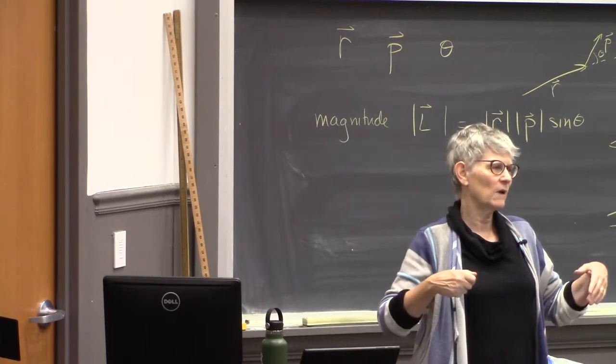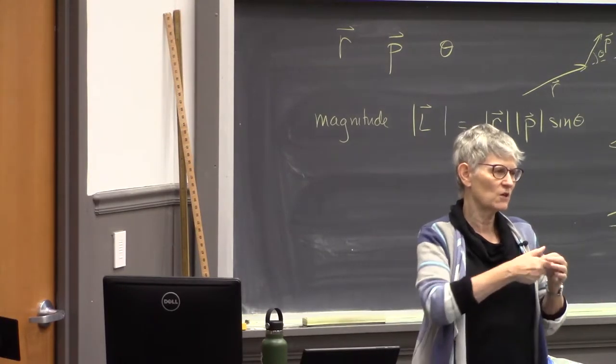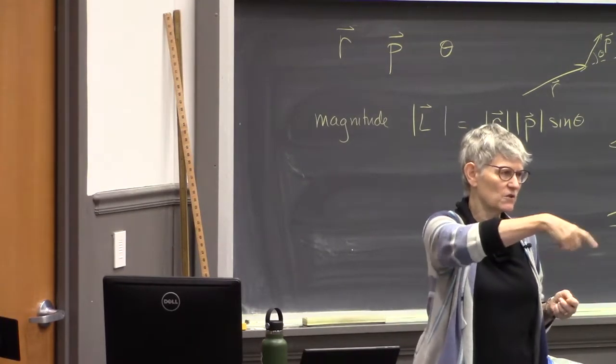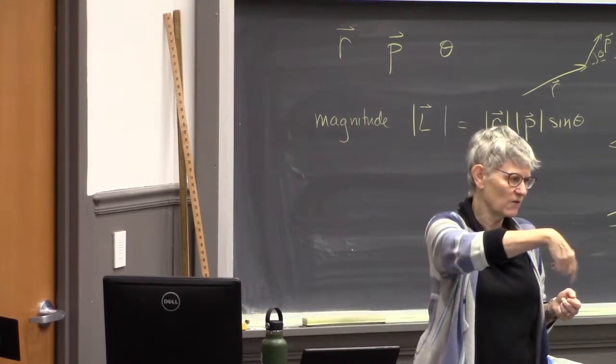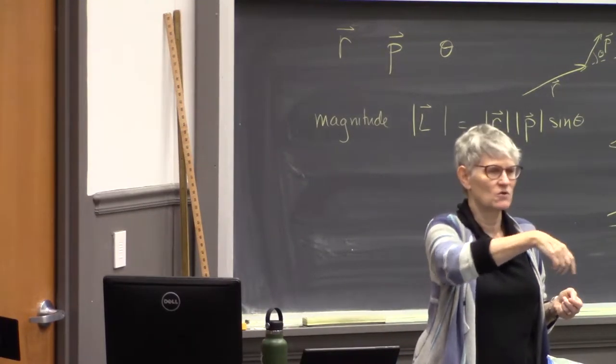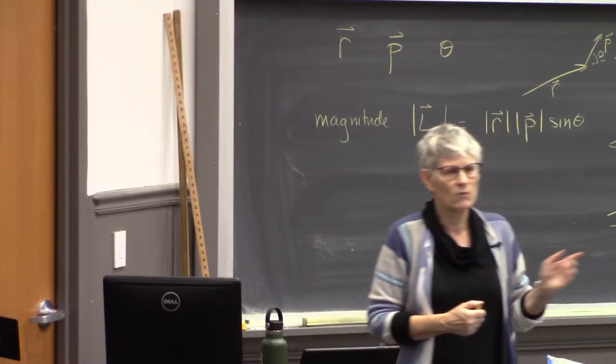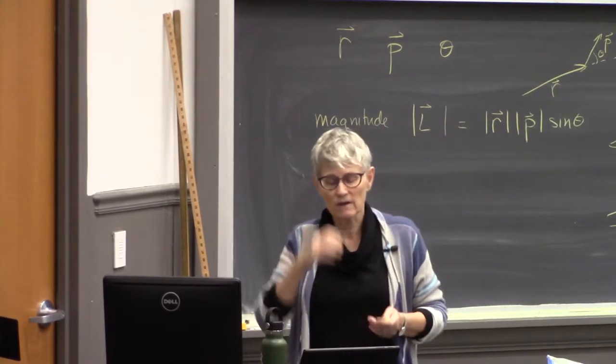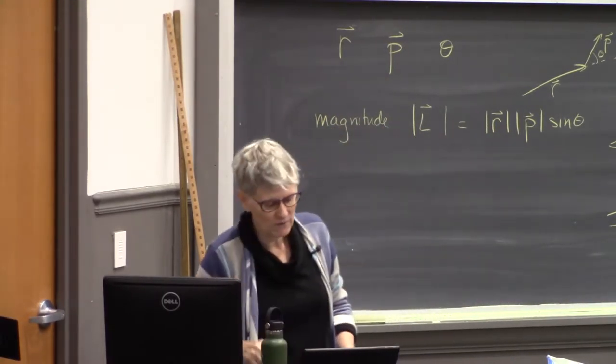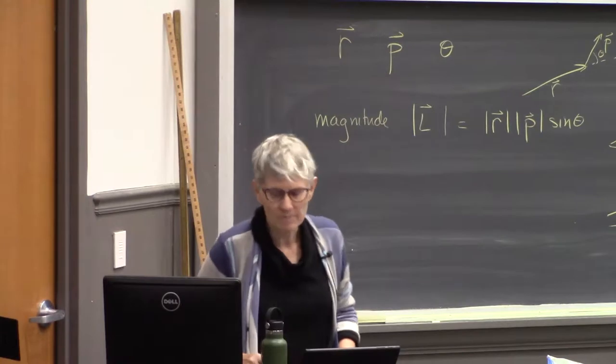Angular momentum has two parts: translational angular momentum, associated with orbiting around some location, and rotational angular momentum, associated with spinning around an axis through the center of mass. We'll learn to calculate both today.